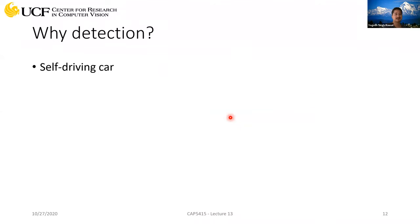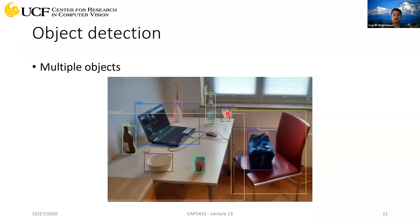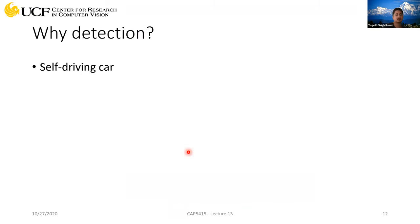Now the question is why exactly we need object detection, since classification is also doing the job — it's telling you which objects are present or not. For example, a classifier can tell you there's a chair, table, laptop, cup, bottle. But when you look from any application point of view, the need for detection becomes very easy to understand.